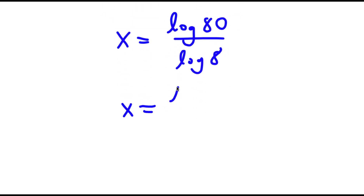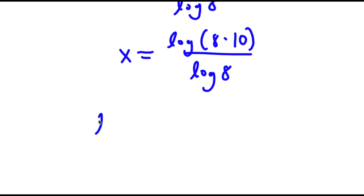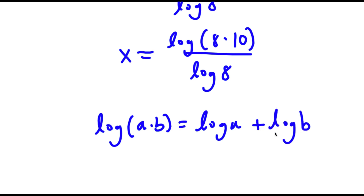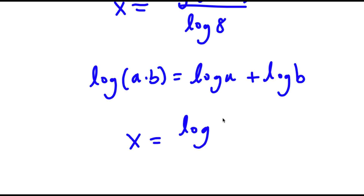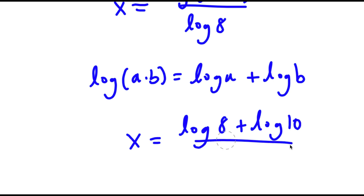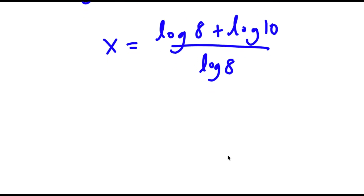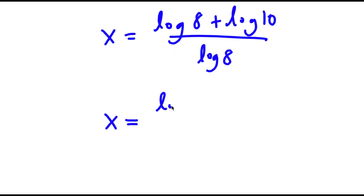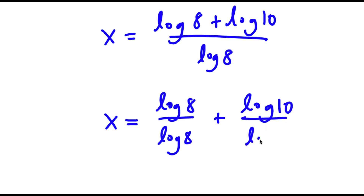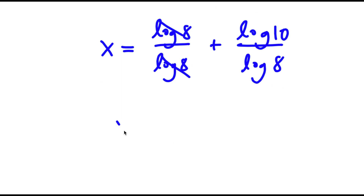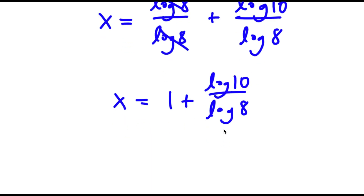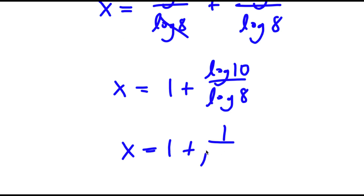Now log 80, I can rewrite as log of 8 times 10, and I have this over log 8. If I have something in the form log a times b, this is equal to log a plus log b. So log 8 times 10 is equal to log 8 plus log 10, all over log 8. This is the same thing as log 8 over log 8 plus log 10 over log 8. Log 8 over log 8 cancels out, so now I have x is equal to 1 plus log 10 over log 8. Log 10 equals 1, so x is equal to 1 plus 1 over log 8.